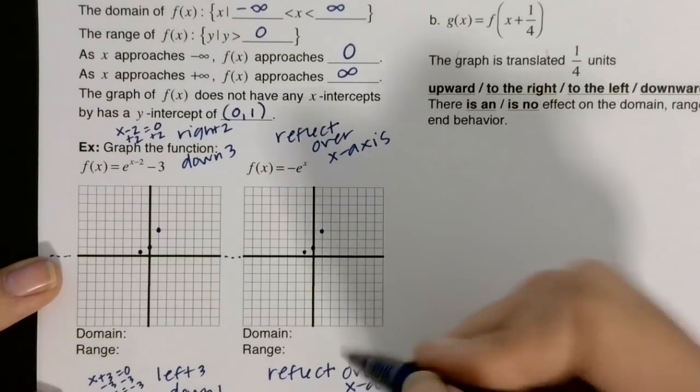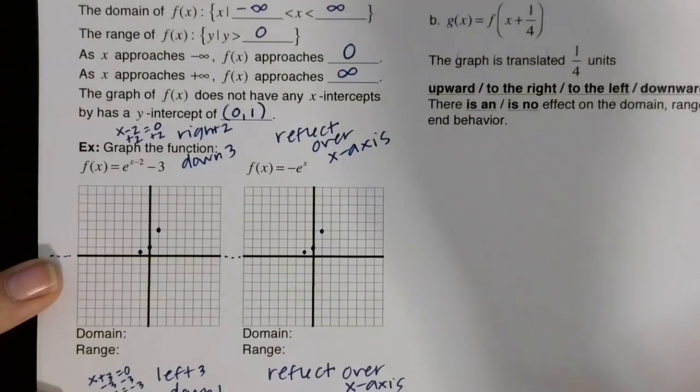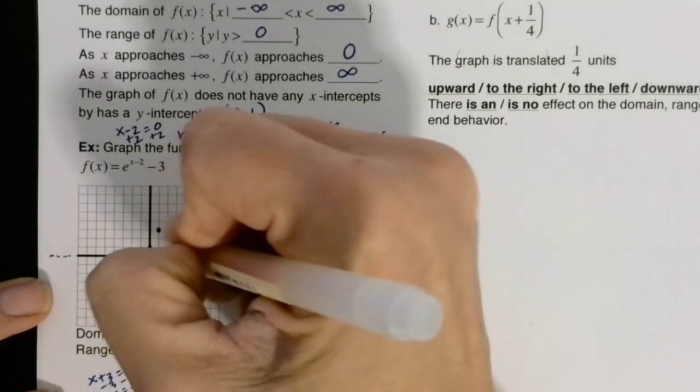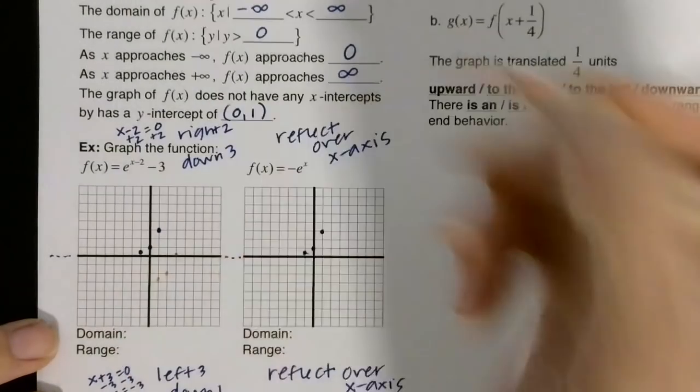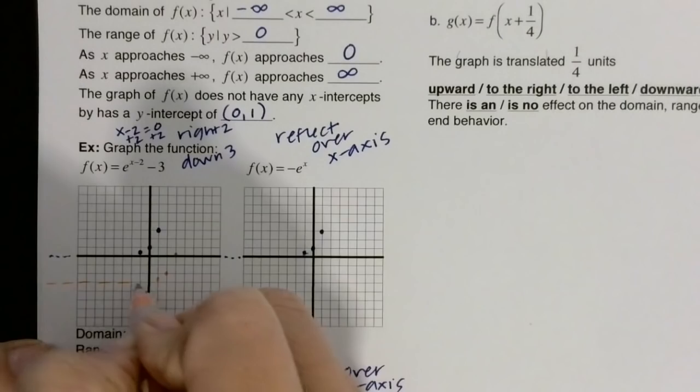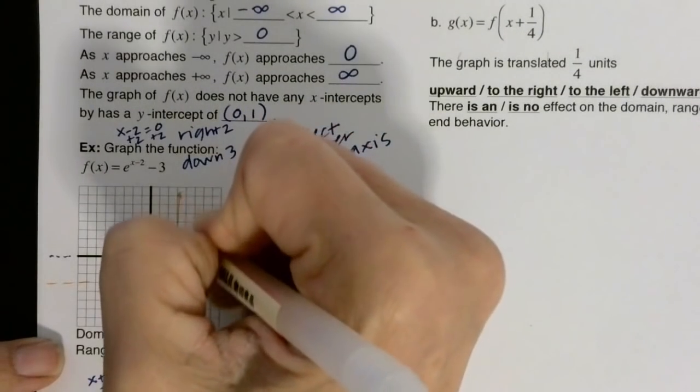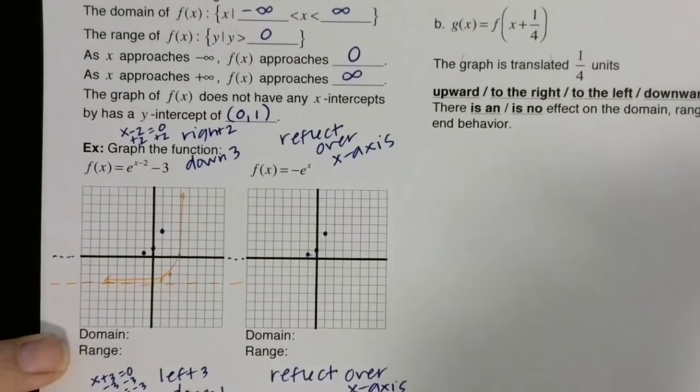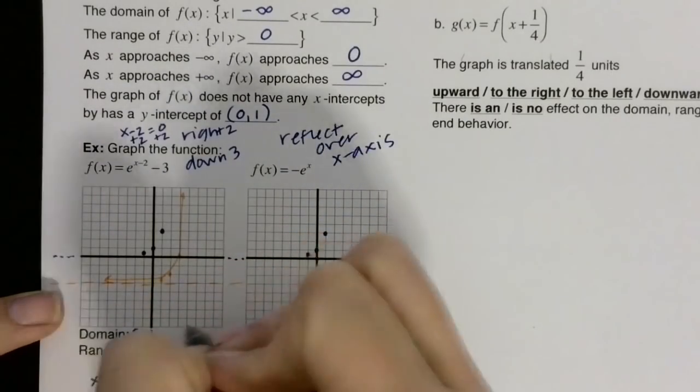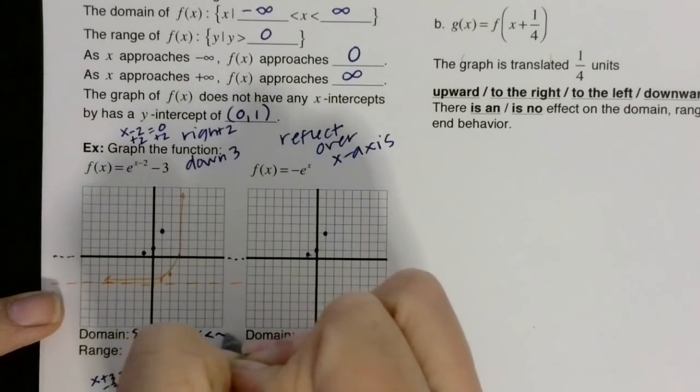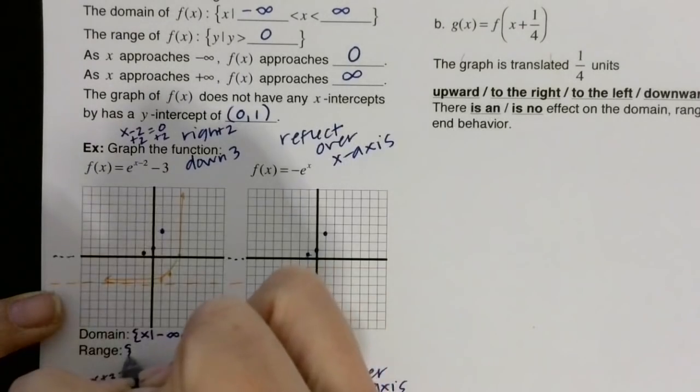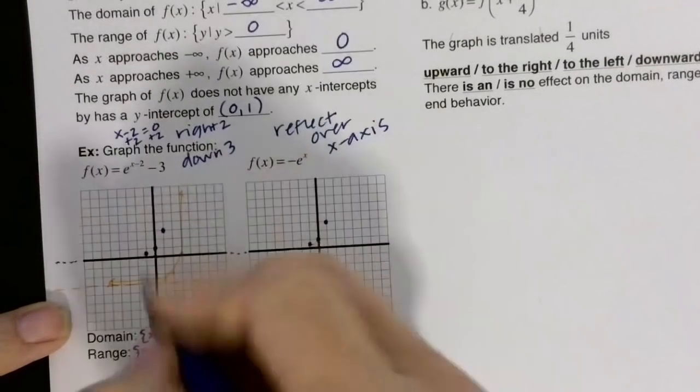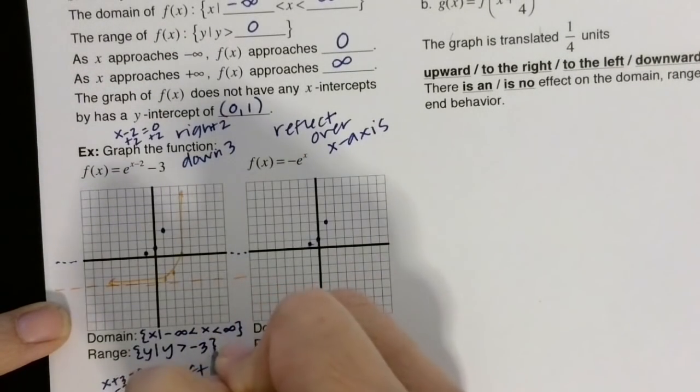This one right here is going to go right 2 and down 3. So move it right 2 and go down 1, 2, 3, right 2 down 1, 2, 3, right 2 down 1, 2, 3. And then we have our asymptote right there. And there's our graph. So now we just need to fill out our domain and range. For exponentials, it's the same thing regardless if it's growth or decay. The only one that changes is our range, and we can see from our graph and equation that it has to be greater than negative 3.